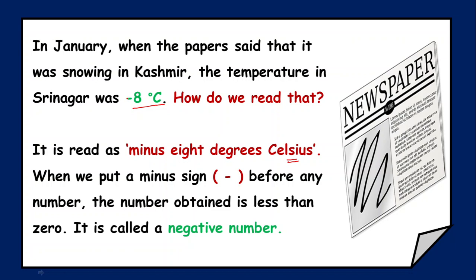When we put a minus sign before any number, the number obtained is definitely less than zero. For example, in a refrigerator's freezer, the temperature is less than zero degrees Celsius to convert water into ice cubes. A number which is less than zero is called a negative number, and to convey a negative number we apply a minus sign before it.